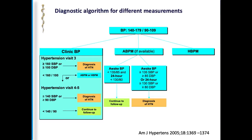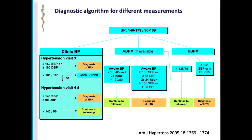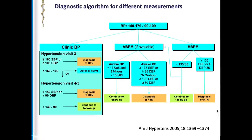Ambulatory blood pressure is a good option but has its own limitations, such as availability. If ambulatory BP is available and the awake blood pressure is more than 135/85, or even the 24-hour blood pressure is in this range, you will label them as hypertensive. If values are lesser than this range, continue to follow up. For home blood pressure monitoring as well, if values are less than 135/85, continue follow-up; if more than this, label them as hypertensive.